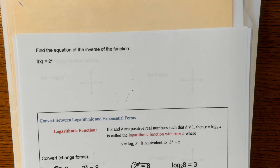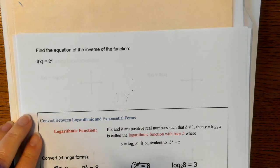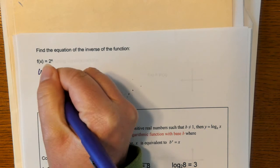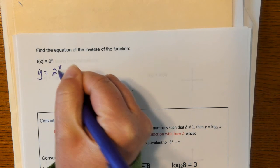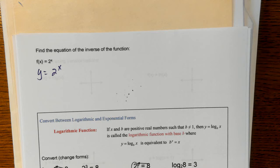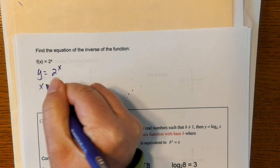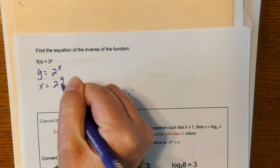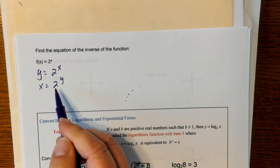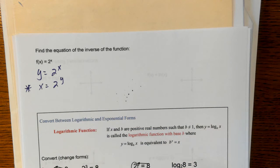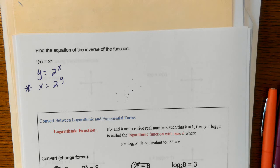Remember from 4.1 when we first learned about inverses: step one of finding an inverse equation was to trade F(x) for y. So this equation is really y = 2^x. Then we swap the x's and y's — we interchange them. So when I interchange them, I get x = 2^y. That's the inverse right there — we found it. The problem is we can't graph this or type it in a calculator until we get y by itself, and that's where we run into trouble.